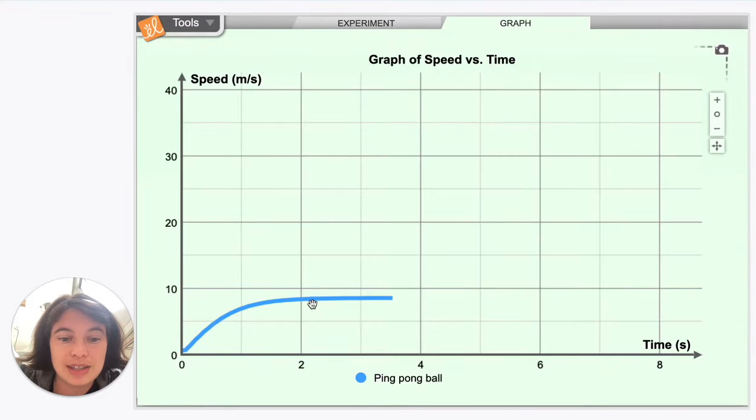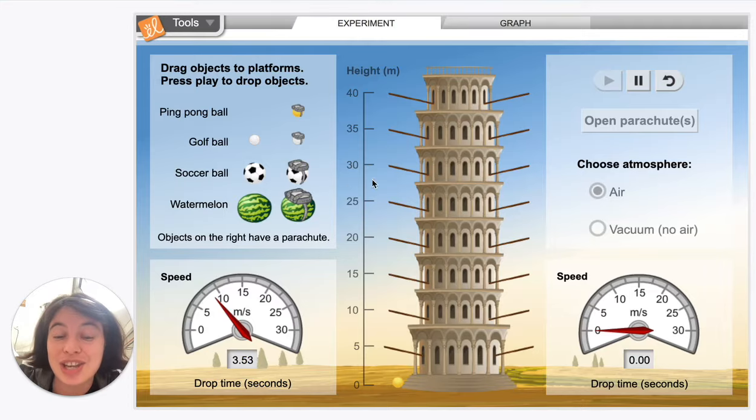So you can see it's almost leveling out here on the graph. The velocity isn't changing as much.